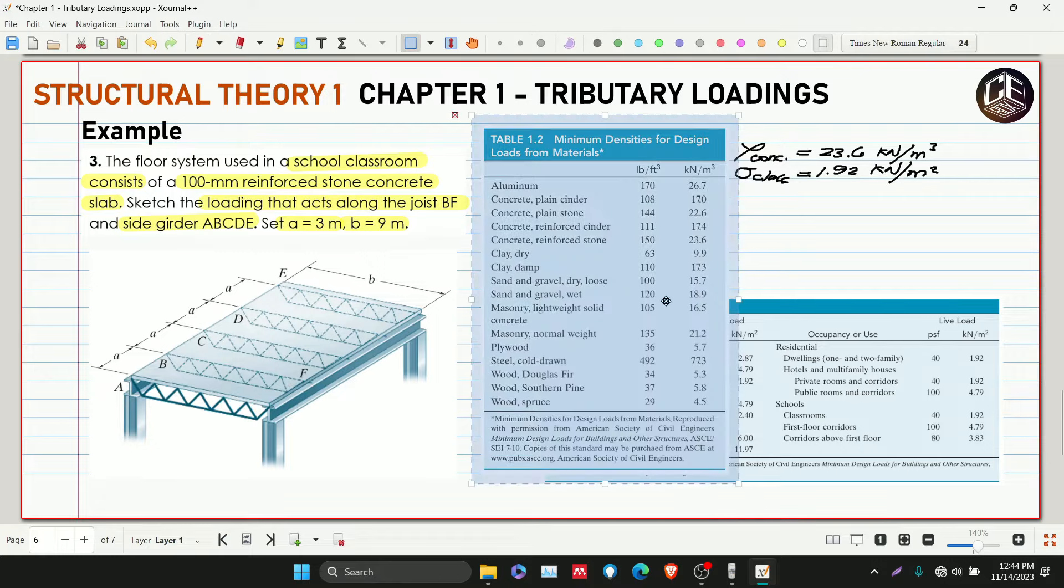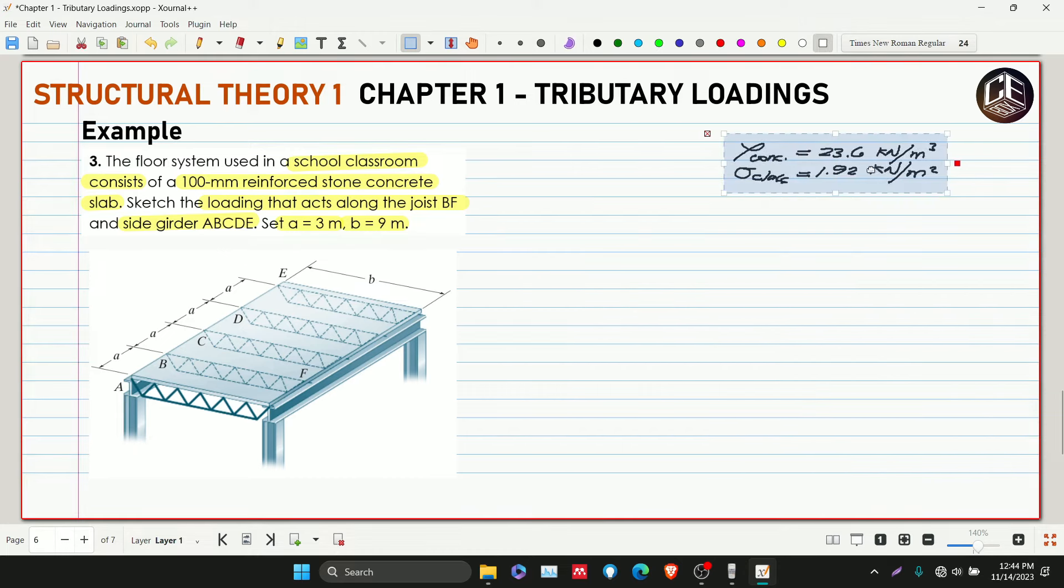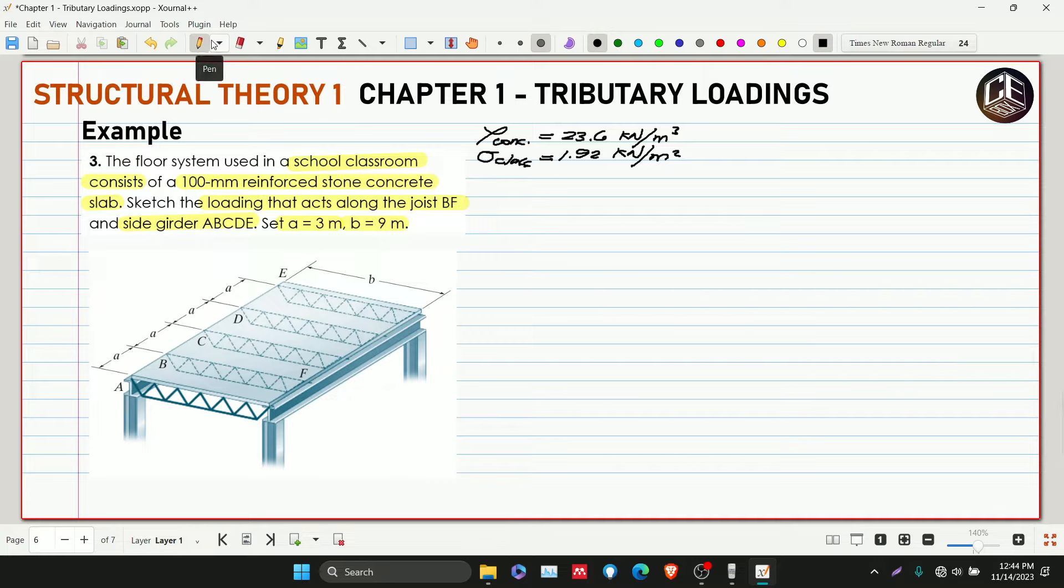Now we'll check what type of floor system we have in our slab. This is a, and this is b, so 9 meters and 3 meters.